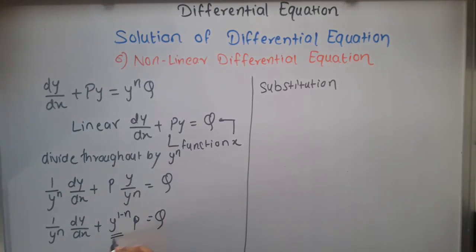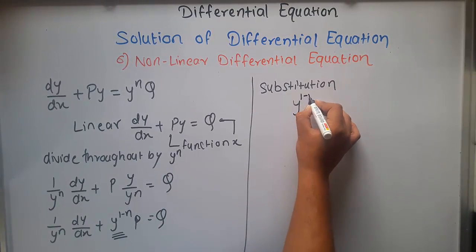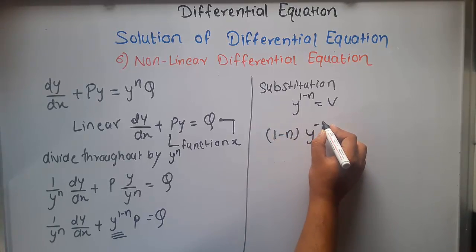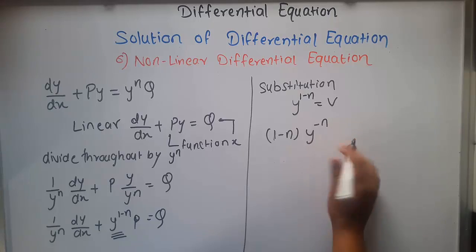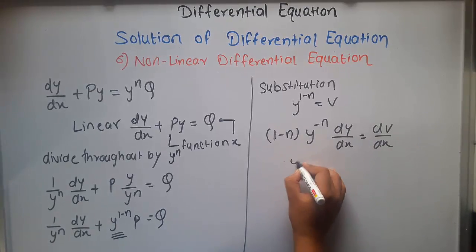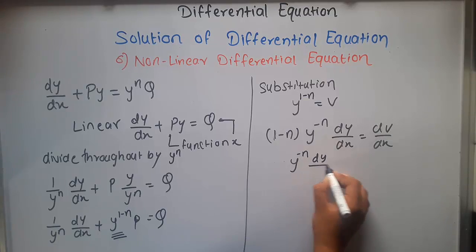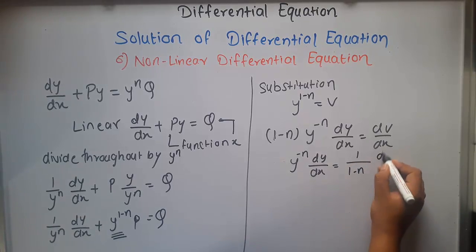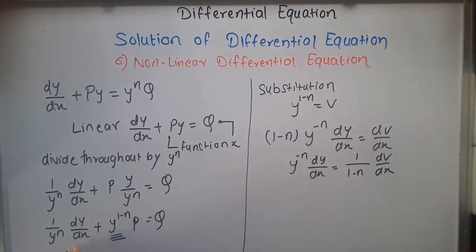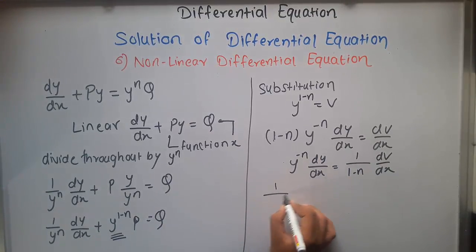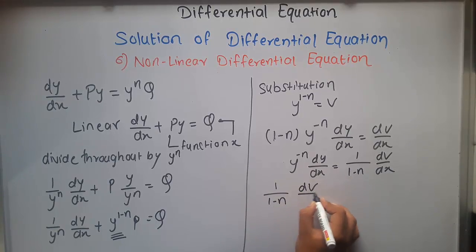For the substitution, we always take the term associated with P, which is y^(1-n), and set it equal to v. Differentiating gives (1-n) · y^(-n) · dy/dx = dv/dx. Rearranging, we get (1/(1-n)) · dv/dx in place of (1/y^n) · dy/dx.